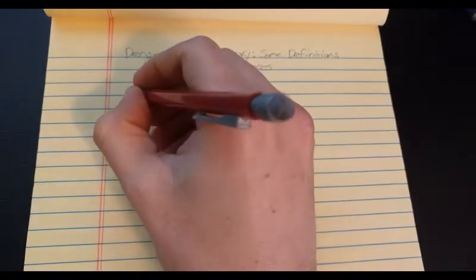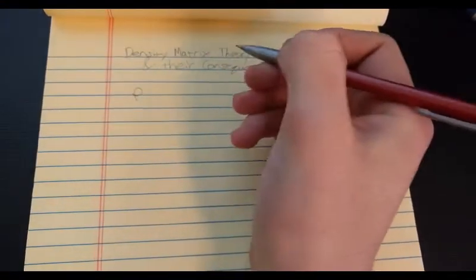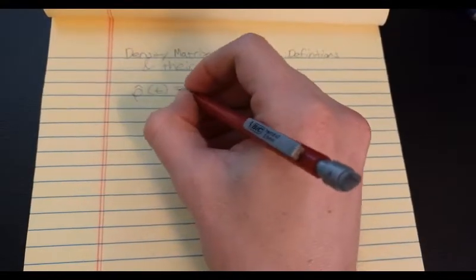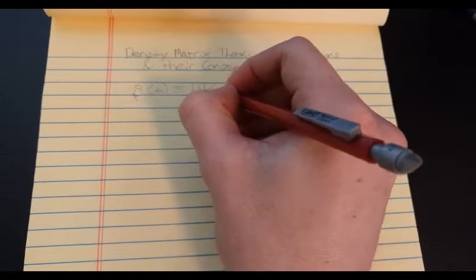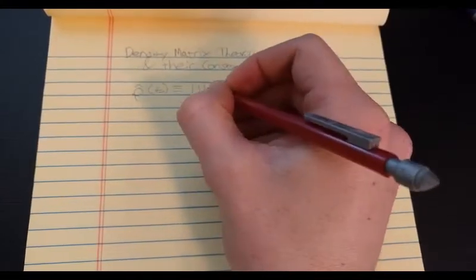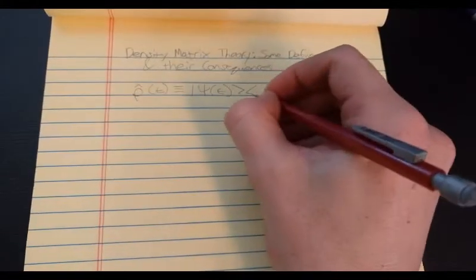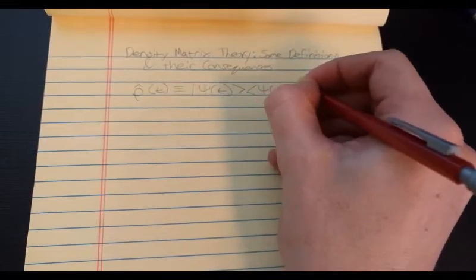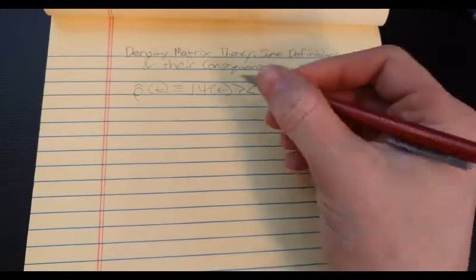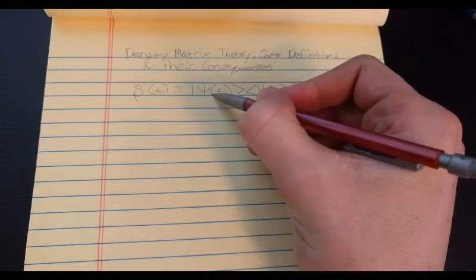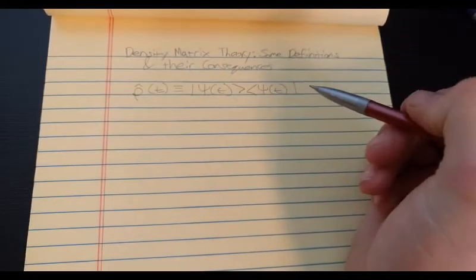So the density matrix which is usually denoted rho and it could depend on time, it's an operator, here, is defined as psi of t the ket side times psi of t the bra side, where psi is the state of our system at time t.